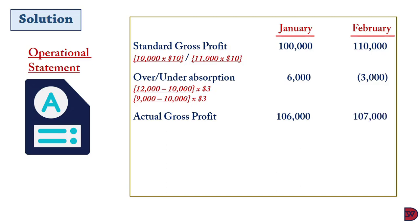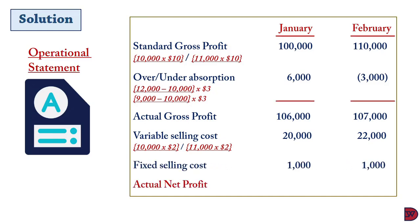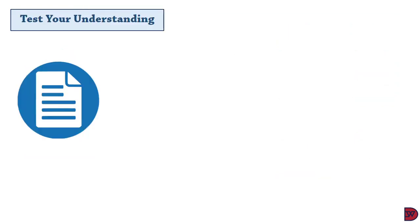We now bring in the variable selling cost — do not include this in the cost card as it is indirect and non-production. It is twenty thousand dollars for January (ten thousand sales units multiplied by two dollars) and twenty-two thousand dollars for February (eleven thousand units multiplied by two dollars). Fixed selling cost is one thousand dollars each month. The actual net profit is eighty-five thousand dollars for January and eighty-four thousand dollars for February.